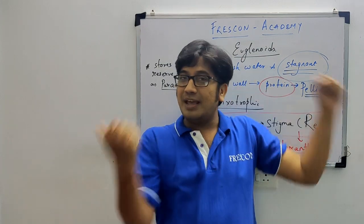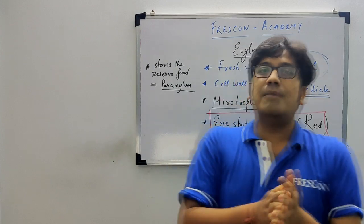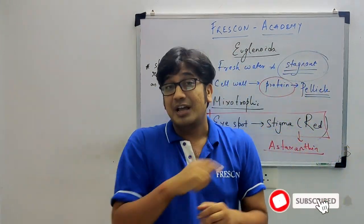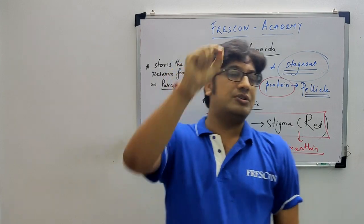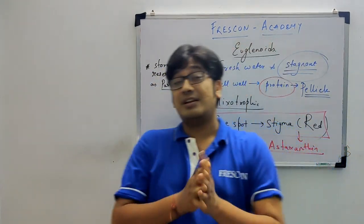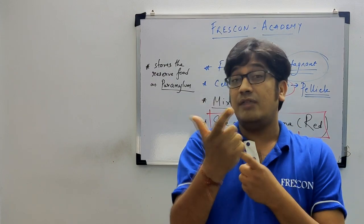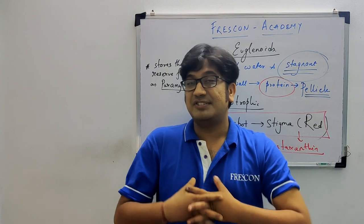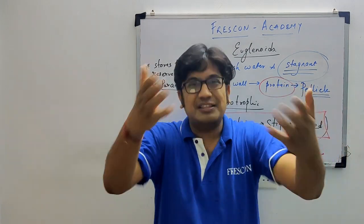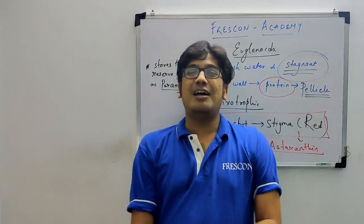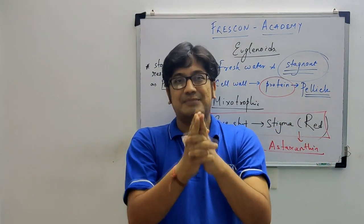To summarize all three: Dinoflagellates — marine, pigmented, armored cell wall. Chrysophytes — diatomaceous earth, diatoms, desmids as golden algae, thin transparent frustule cell wall. Euglenoids — bright red eye spot stigma, astaxanthin pigment, paramylum reserve food, protein cell wall called pellicle making them very flexible. Remember all of these for your exam. Bye bye, take care!